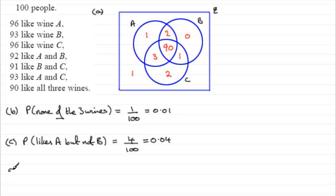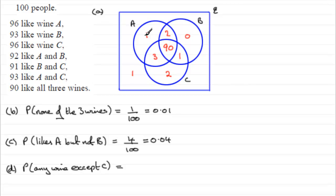For part D, we've got to work out the probability that they like any wine except C. So any wine except C — we've got C here, so any wine other than C is just this one and this two. Obviously if there was a number in that region, we'd count that in as well. But it's just going to be a total of one and two — that's three. Three out of 100, or as a decimal, 0.03.